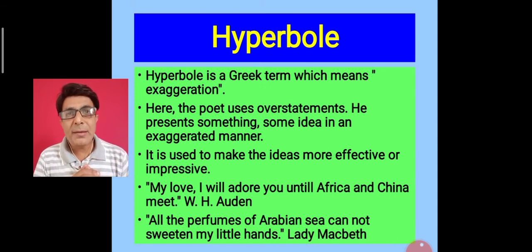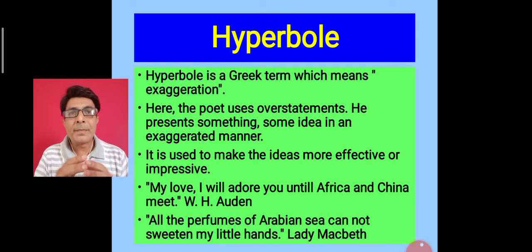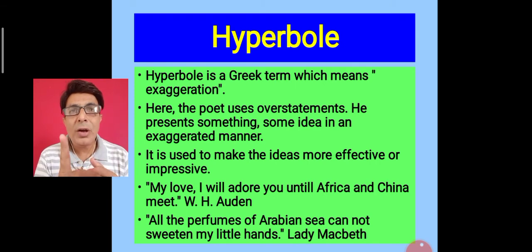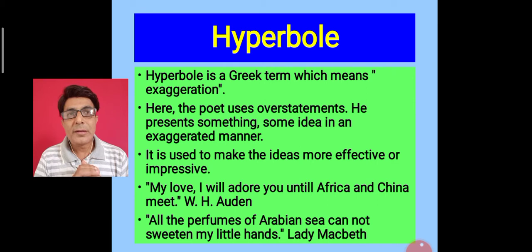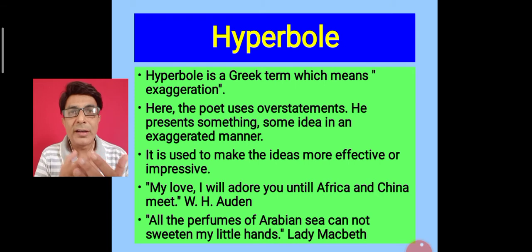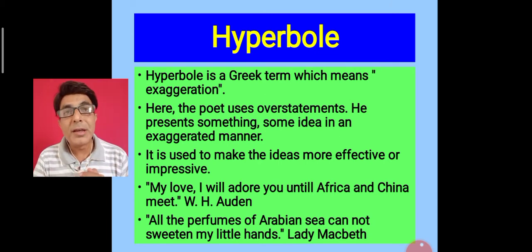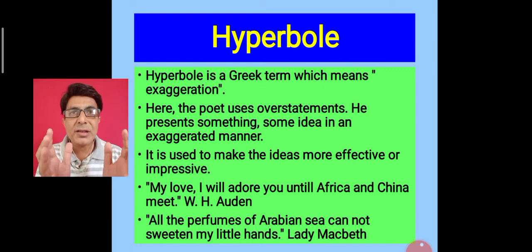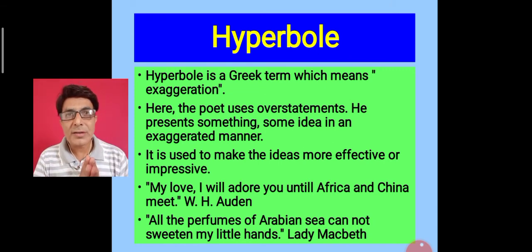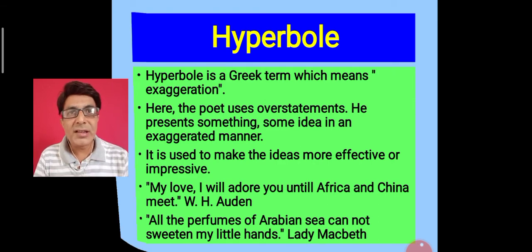Let's take another example by William Shakespeare. William Shakespeare has written a tragedy called Macbeth. In Macbeth, there is a character, Lady Macbeth, the wife of Macbeth. She speaks this line: 'All the perfumes of Arabian sea cannot sweeten my little hands.' Lady Macbeth wants to say that she has committed so many crimes that the smell of blood on her hands can never be sweetened even by all the perfumes of the Arabian sea. This much perfume cannot be brought — it is an exaggeration, it is a hyperbole.